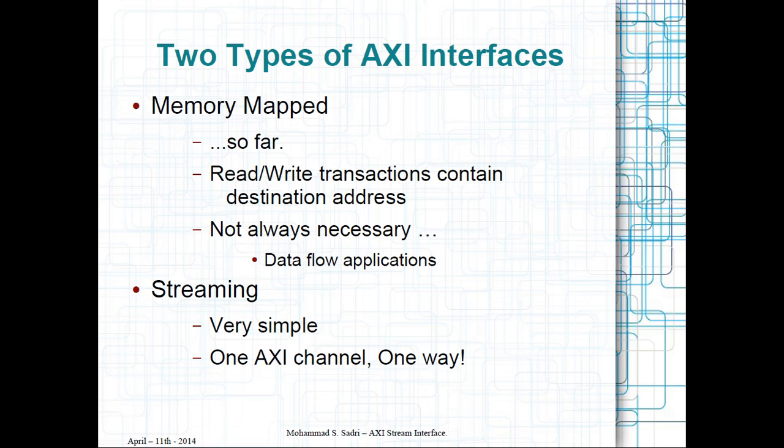But in your system which you implement on the FPGA, this is not always necessary. In many cases you have just a flow of data through your modules, meaning that one module receives the data, it performs a set of processing on the data, and passes the data directly to the next module. In this kind of processing you don't really need an address.